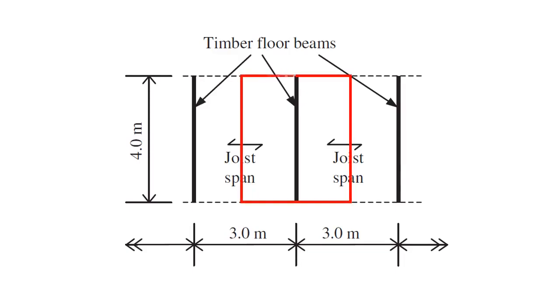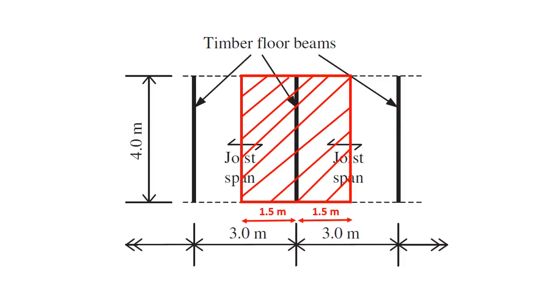Load of this shaded area will be borne by the beam which we consider. Width of the shaded area is 3 meters and length is 4 meters. So the area of the shaded area is 4 times 3 equals 12.